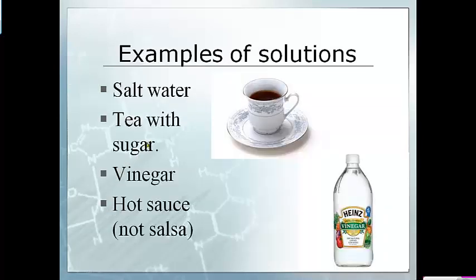Some examples of solutions: salt water, tea with sugar, vinegar, and hot sauce without the chunky stuff — like Frank's sauce — would be considered a homogeneous mixture or a solution. Remember, dissolving things in other things is a physical change. We're basically just breaking down the salt or sugar into smaller and smaller particles that can't be seen, but they're still separate from the solvent.